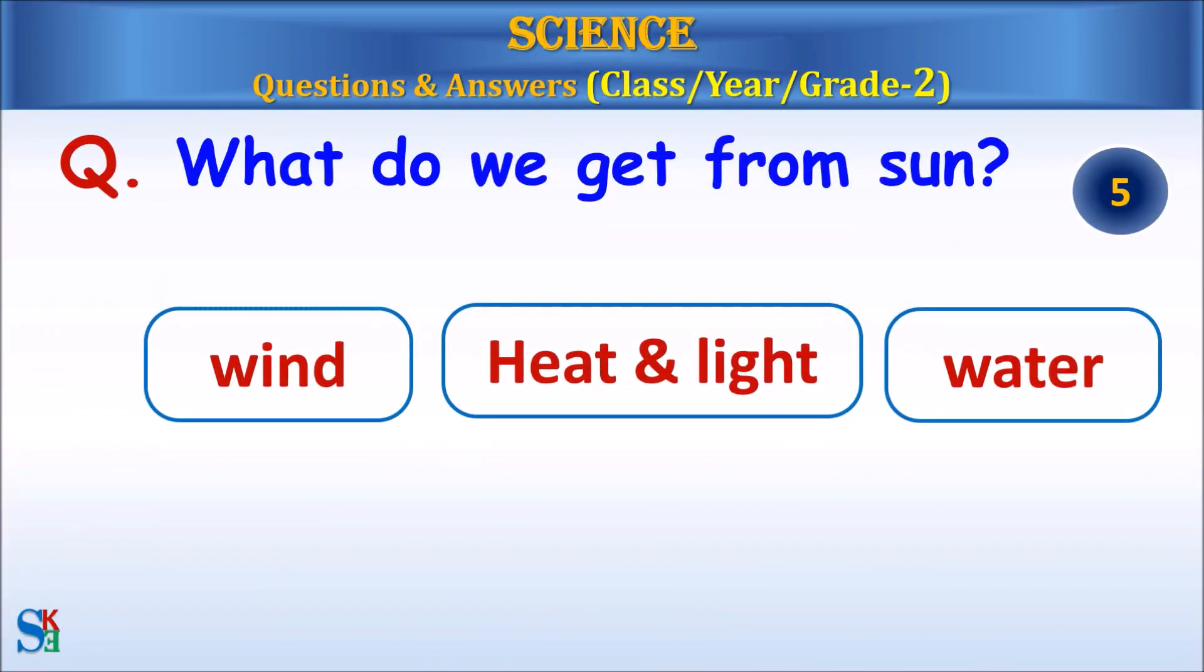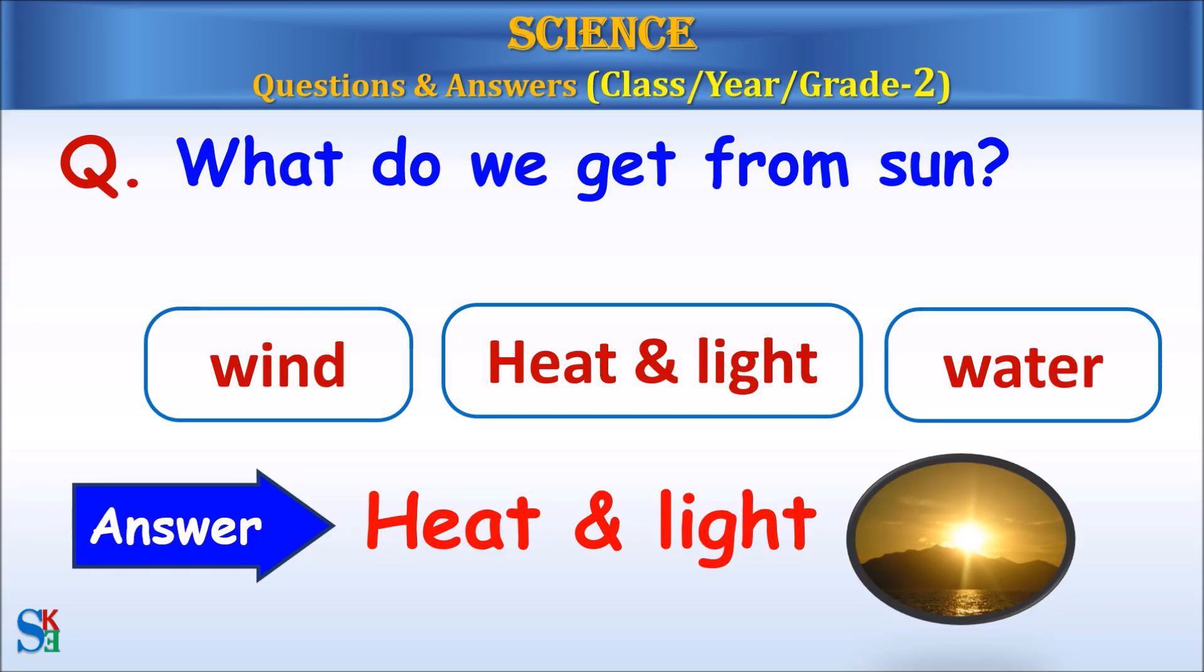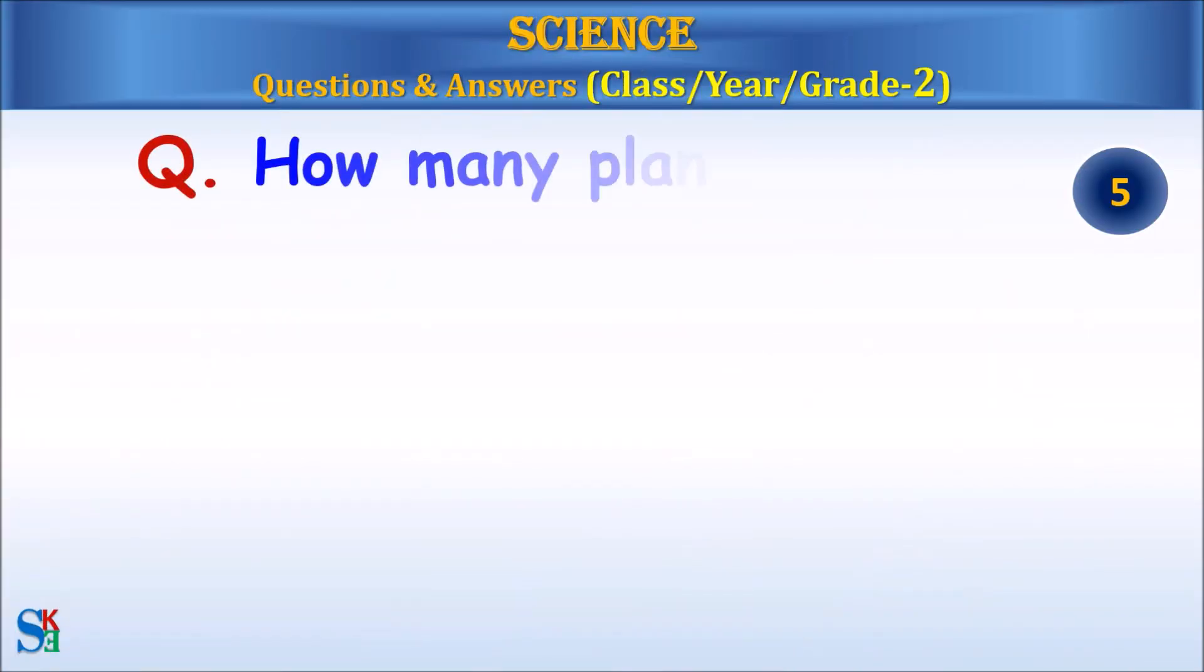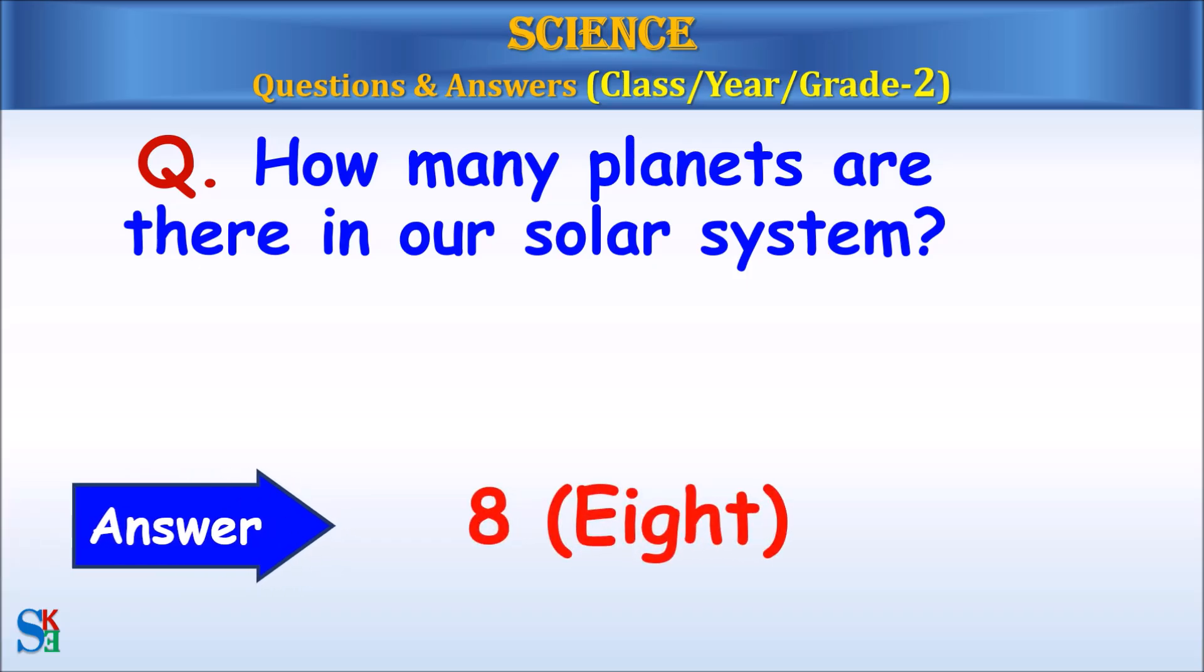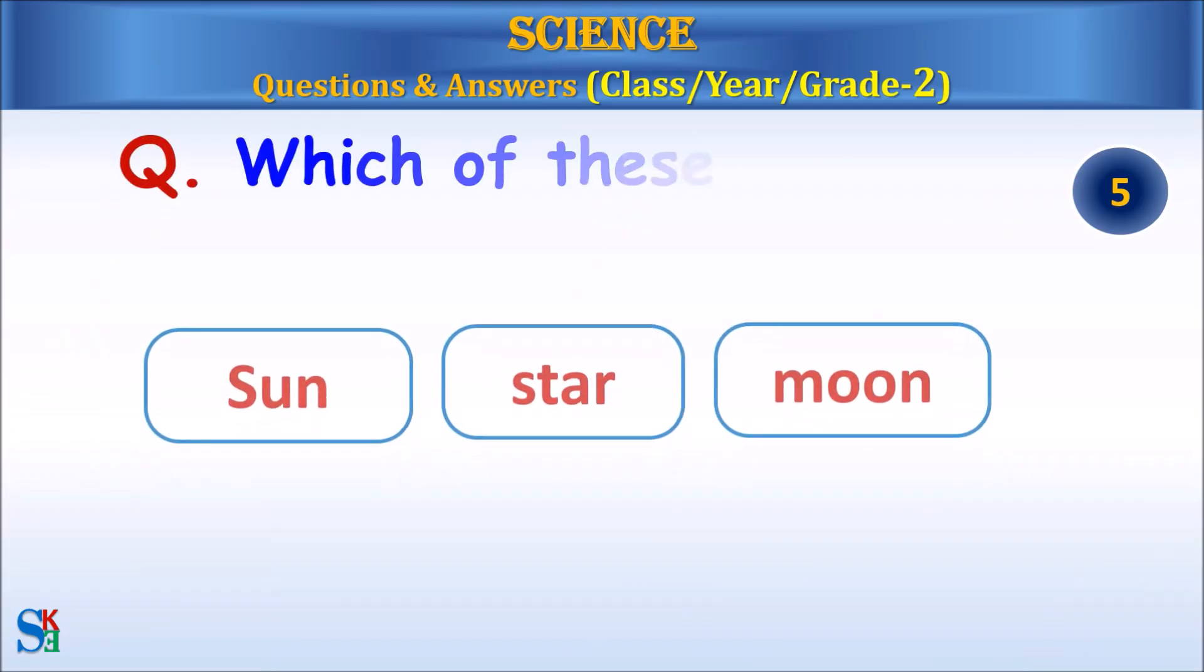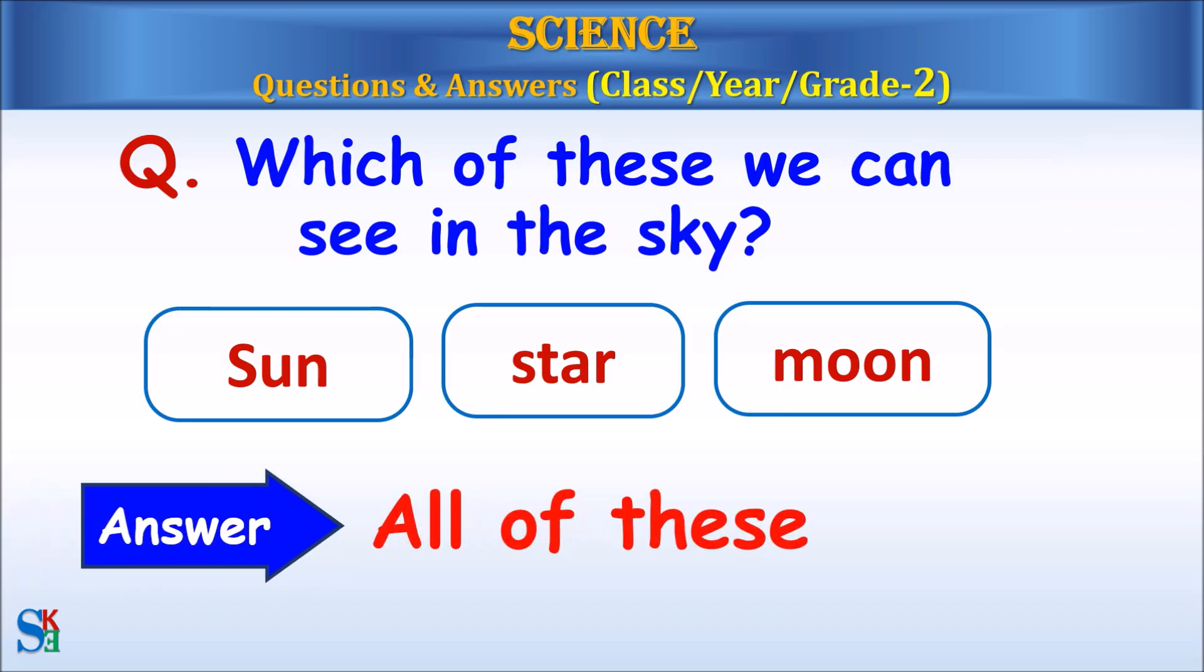What do we get from the sun? Wind, heat and light or water? Answer, heat and light. How many planets are there in our solar system? Answer, eight. Which of these can we see in the sky? Sun, star or moon? Answer, all of these.